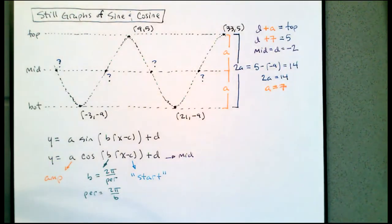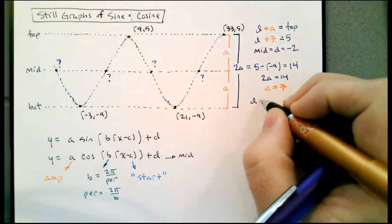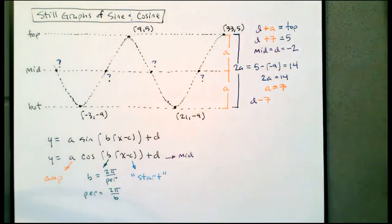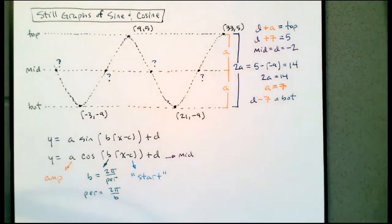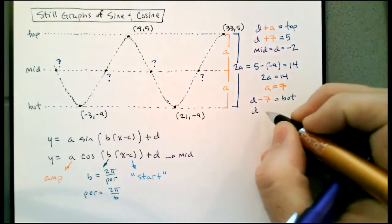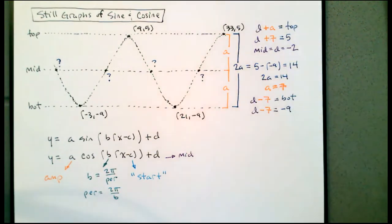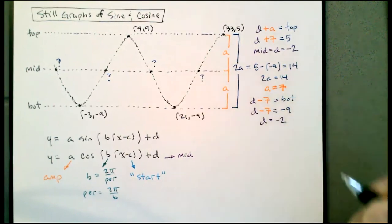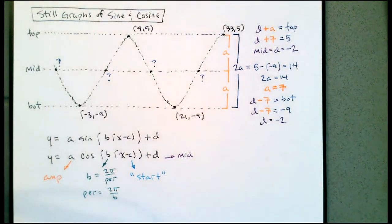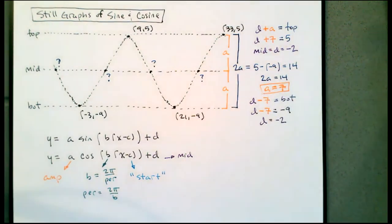We could also do this using the bottom. If I take the middle D and subtract A, that puts us at the bottom of the graph, which is at negative 9. So if I add 7 to negative 9, I calculate D is still negative 2. If I got two different values for the middle, then one would be wrong — but both give negative 2, so I've got the amplitude and the middle. All my vertical information is sorted out.